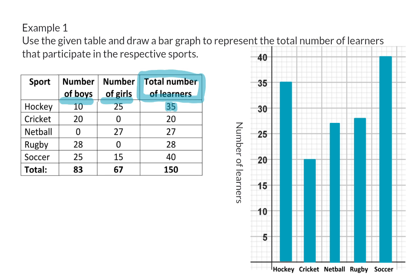From this graph, we can conclude that soccer is the most popular sport. But soccer is also played by boys and girls, so let's go one step further and make a double bar graph where we separate the boys' and girls' participation.